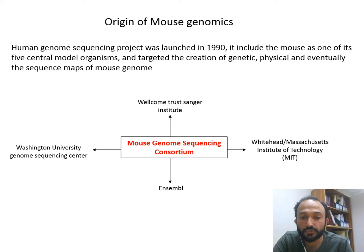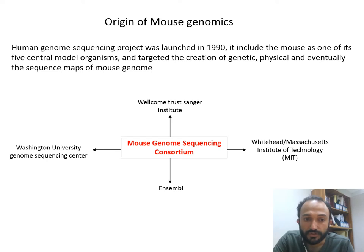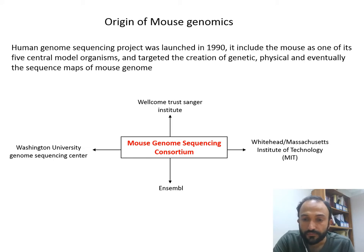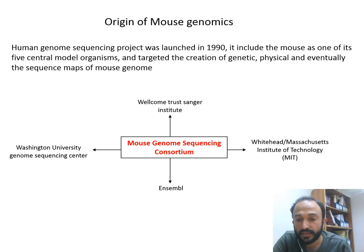At that time, the Mouse Genome Sequencing Consortium was established. These institutes and universities are very famous names: the Wellcome Trust Sanger Institute was part of the project, Washington University Genome Sequencing Center was also part of this project, and Massachusetts Institute of Technology, MIT, was also part of the project. One browser was also established, which we will discuss later.